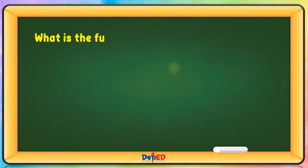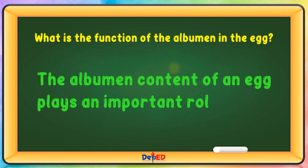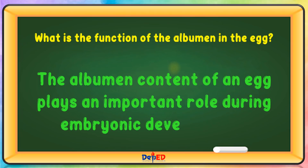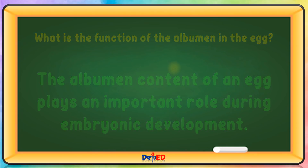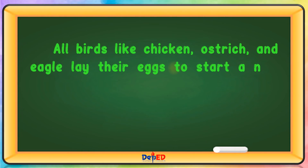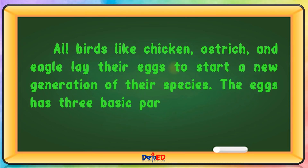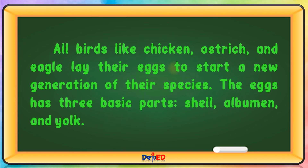What is the function of the albumin in the egg? The albumin contents of an egg play an important role during embryonic development. All birds like chicken, ostrich, and eagle lay their eggs to start a new generation of their species. The egg has three basic parts: the shell, the albumin, and the yolk.